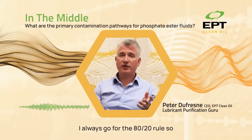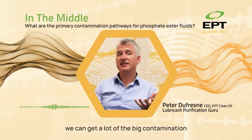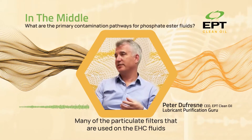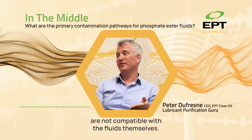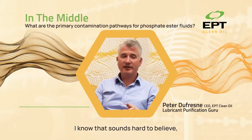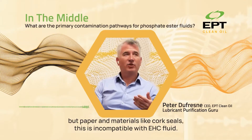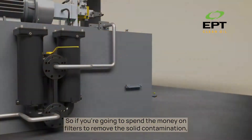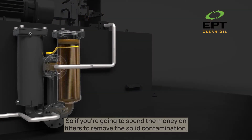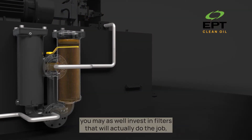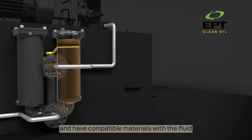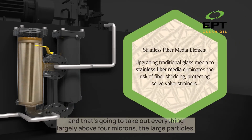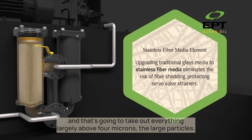I always go for the 80-20 rule, so we can get a lot of the big contamination out of the system just by using an upgraded particulate filter. Many of the particulate filters used on EHC fluids are not compatible with the fluids themselves. Paper and materials like cork seals are incompatible with the EHC fluid. So if you're going to spend the money on filters to remove solid contamination, you may as well invest in filters that will actually do the job, have compatible materials with the fluid, and have a high efficiency rating — taking out everything largely above 4 microns.